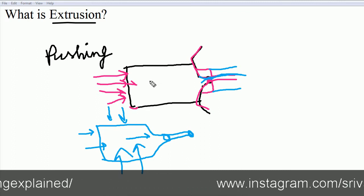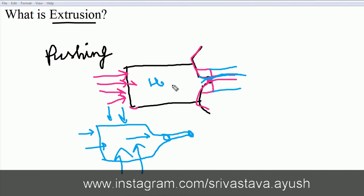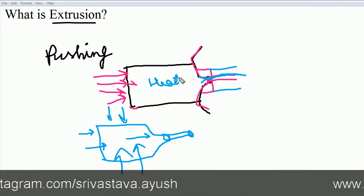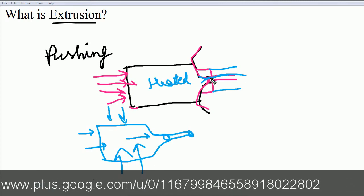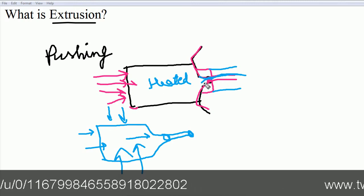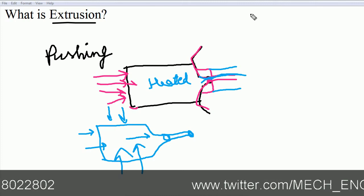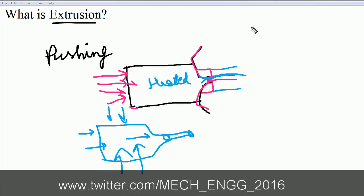the heated metal—above its recrystallization temperature—is forced or pushed through a suitable die. A die can be of any cross-section like this,